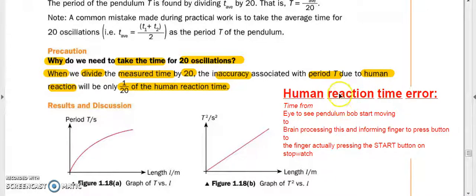I talked a bit about human reaction time error in my previous video. Basically, human reaction error is the time from when I see the pendulum bob start moving, to the brain processing this and sending a message to my finger to press the button on the stopwatch, to the finger actually pressing the start button. Even though it's very short, there's still a human error called human reaction time error.